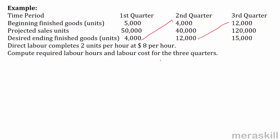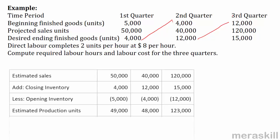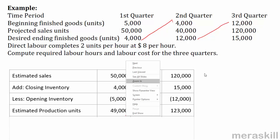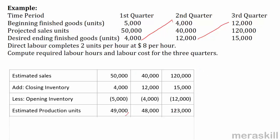Compute labor hours and labor cost for three quarters. First, find how much is to be produced. In quarter 1 it will be 49,000 — that is 50,000 minus 5,000 plus 4,000. Quarter 2 would be 40,000 minus 4,000 plus 12,000, giving 48,000. Quarter 3 gives 123,000 production units.